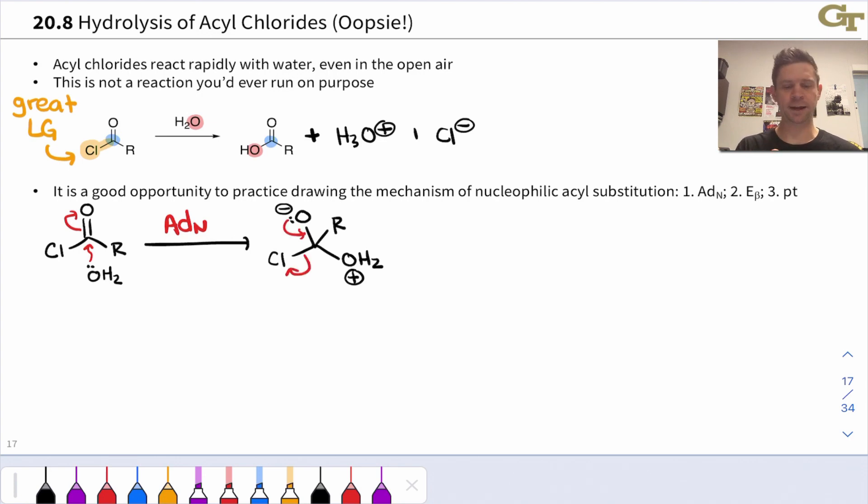This can then eliminate chloride very rapidly to give essentially the protonated product. Proton is removed and we end up with a neutral carboxylic acid when this is all said and done and the byproducts are the chloride that was eliminated in this beta elimination step and H3O+ which was generated in this deprotonation step.